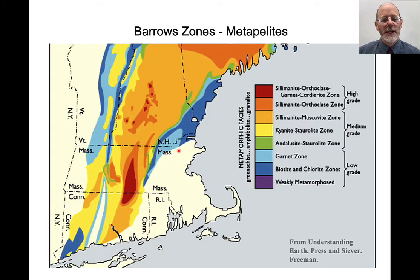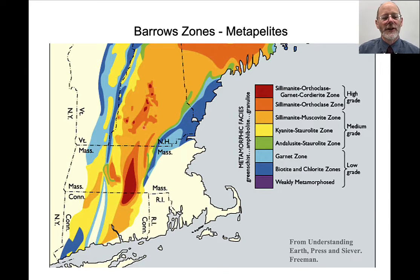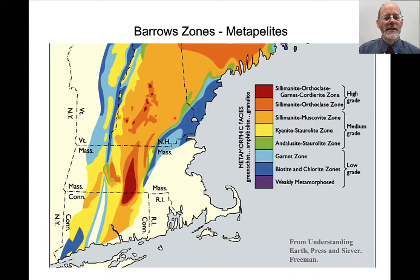Barrow's zones can be mapped out in many other regions. This is New England — Massachusetts, northeastern United States. The hotter colors here are higher-temperature metamorphic minerals: sillimanite, K-feldspar. The cooler colors are lower-grade metamorphic zones: biotite, chlorite. You can see these gradients going from lower-grade rocks up to higher-grade rocks, just like we saw in Scotland with Barrow's zones.